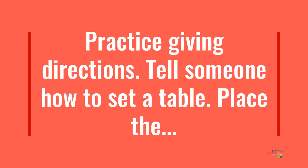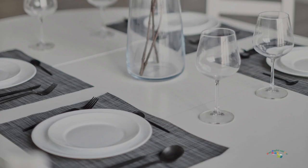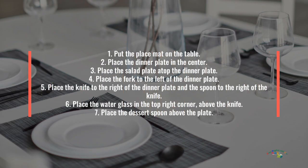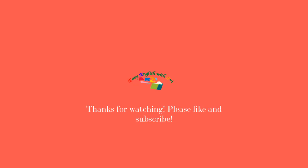Practice giving directions — tell someone how to set a table. Put the placemat on the table. Place the dinner plate in the center. Place the salad plate on top of the dinner plate. Place the fork to the left of the dinner plate. Place the knife to the right of the dinner plate and the spoon to the right of the knife. Place the water glass in the top right corner above the knife. Place the dessert spoon above the plate. Bye for today! Bye bye.